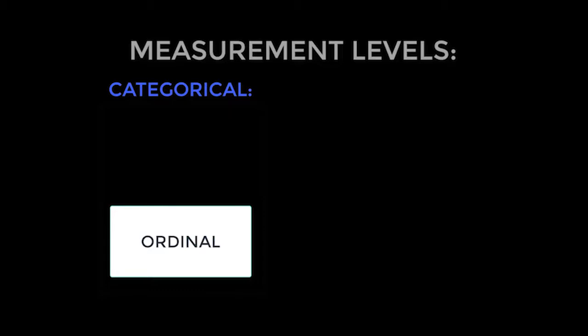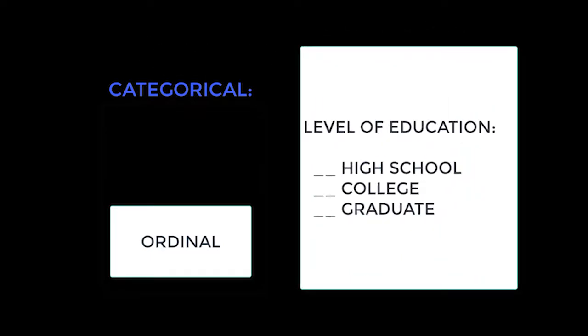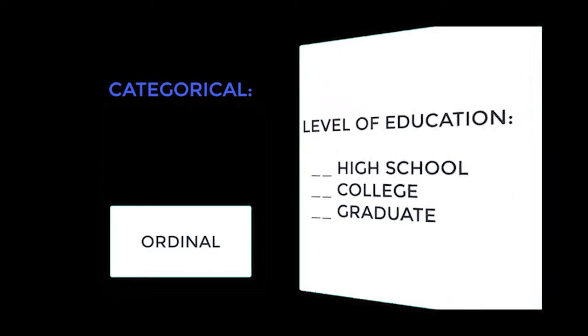Our next measurement level is ordinal. For ordinal measurement, it means that we capture data in categories, but those categories are also ordered — order matters. An example of ordinal measurement could be the level of education. On a survey, the categorical choices might be high school, college, or graduate level education. We see categories, but we also note they are in ascending order, meaning their order reflects more or less of something — in this case, education.